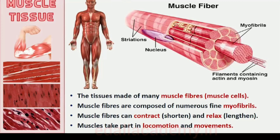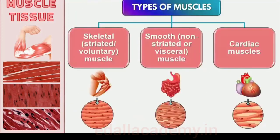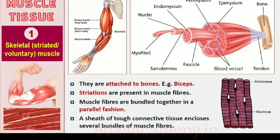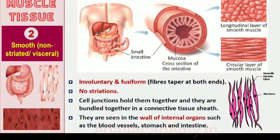Muscles are of three types: skeletal, smooth, and cardiac. Skeletal muscle tissue is closely attached to skeletal bones. In a typical muscle such as the biceps, striated (striped) skeletal muscle fibers are bundled together in a parallel fashion. A sheath of tough connective tissue encloses several bundles of muscle fibers. You will learn more about this in chapter 20.